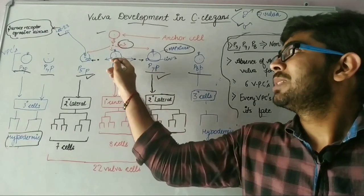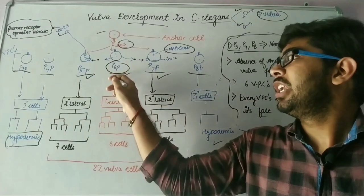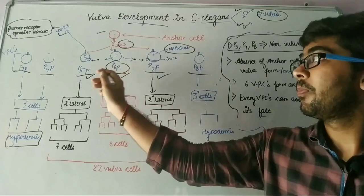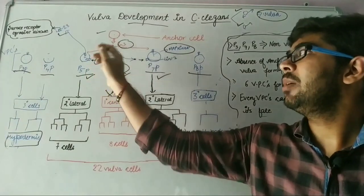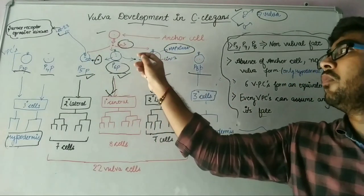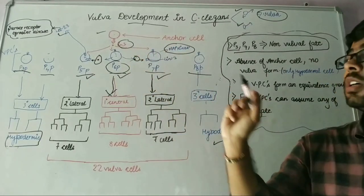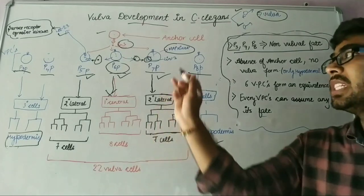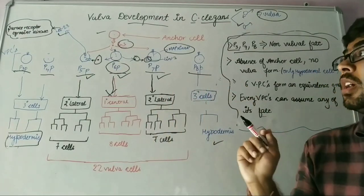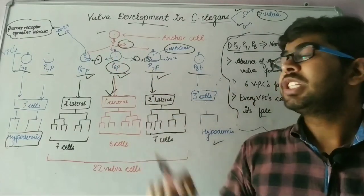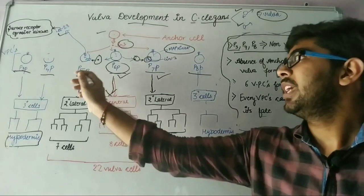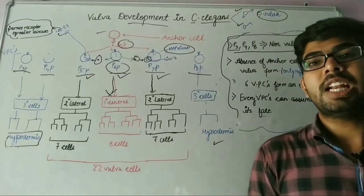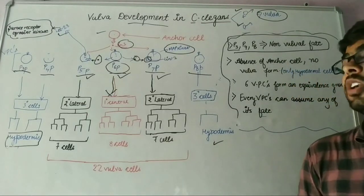Now, the P6P cell will generate primary central fate, but it also produces signaling molecules which will interact with the LIN12 receptor present on P5P and P7P. There will be notch signaling occur in P5P and P7P. We will discuss notch signaling in cell signaling response topic.